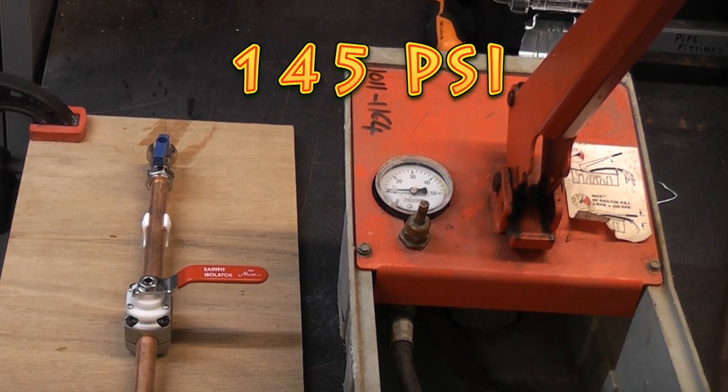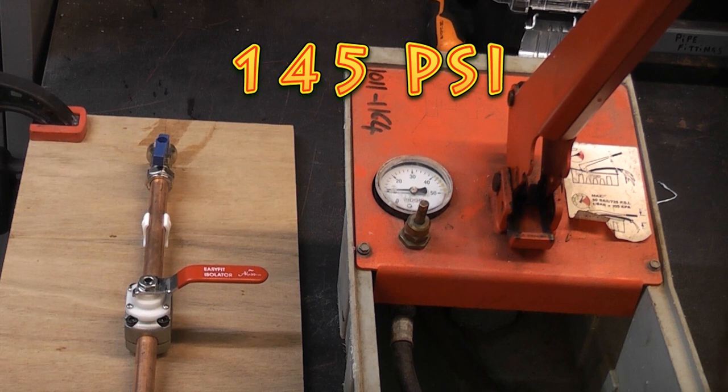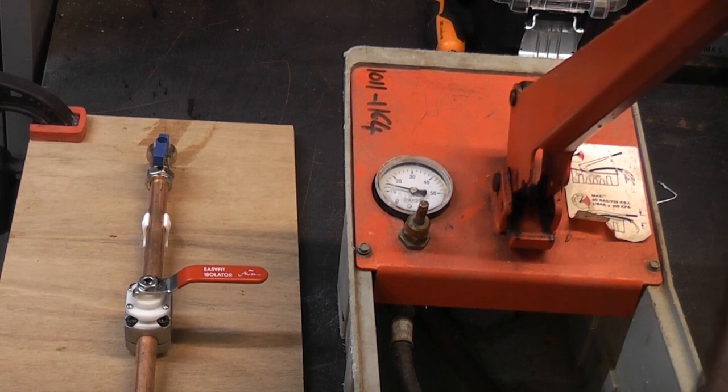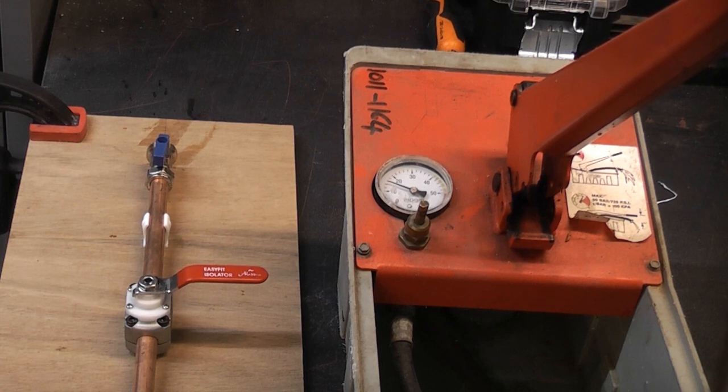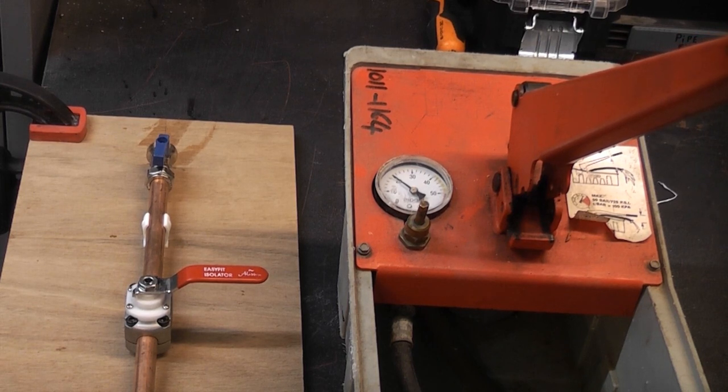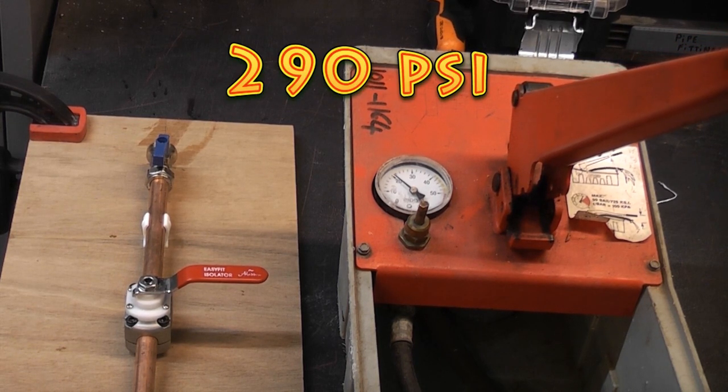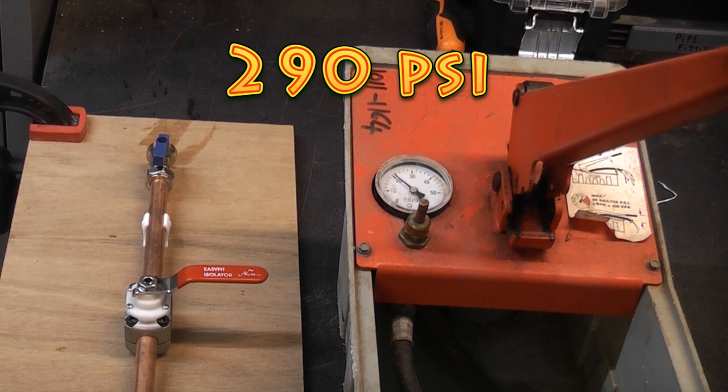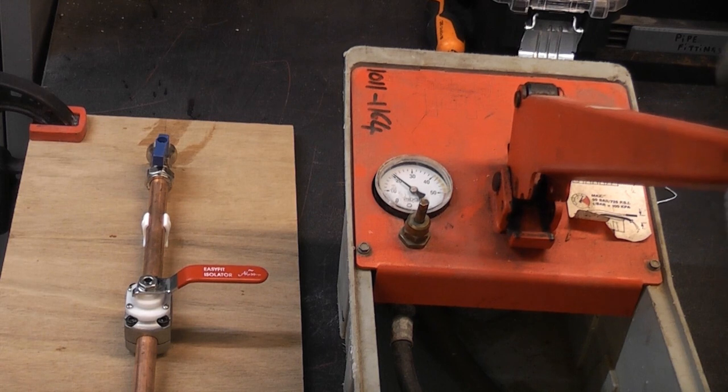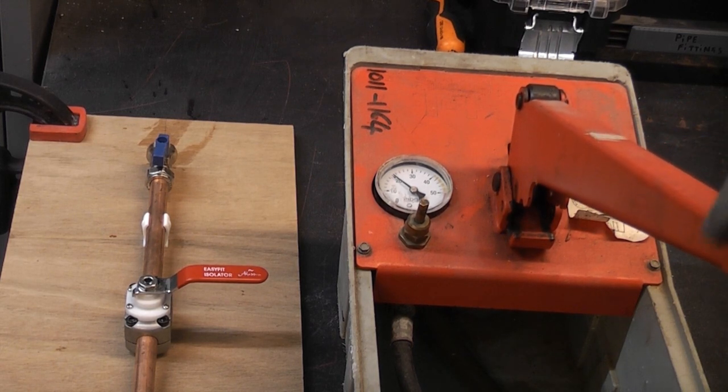So we're now getting up to the 10 bar mark. I have to say that the water pressure in this property is very good and we actually have about 8 bar. So we're now at 20 bar, and 20 bar is a phenomenal amount of pressure. There is no way that you would ever get 20 bar in a domestic plumbing situation.